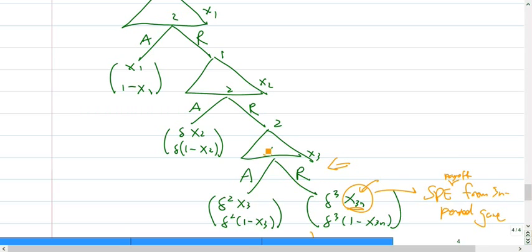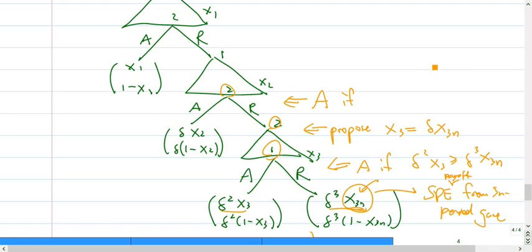I will write a very short version, you should write more on the exam. Player 1 is making a decision. I should accept if this number is larger than this number. So delta 2x3 is larger than or equal to delta 3x3n. So going back, player 2 should make an offer like this. I should propose x3 equal to exactly this boundary one, so it's delta x3n.